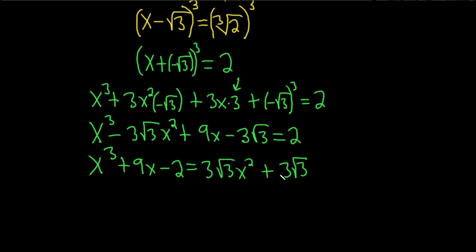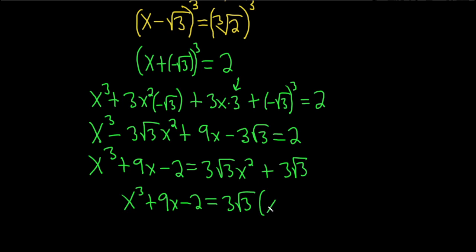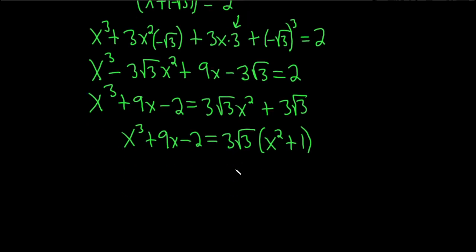Before we square both sides, we can factor out to help eliminate the square root of 3. Let's factor out the 3 as well. So this is x cubed plus 9x minus 2, equal to 3 times square root of 3 times (x squared plus 1). Now we're in a better position because when we square both sides, the square root will go away and we will eliminate it.